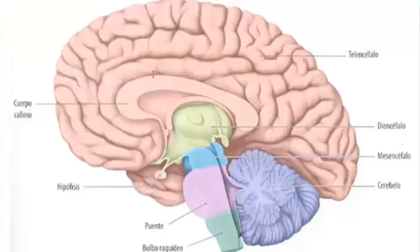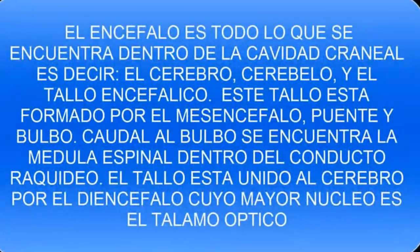The brain stem is united through the encephalus with the cerebrum and the cerebellum through the stem encephalic. The spinal cord is located below the brain stem, that is, under the bulbus rachideus, within the vertebral column.